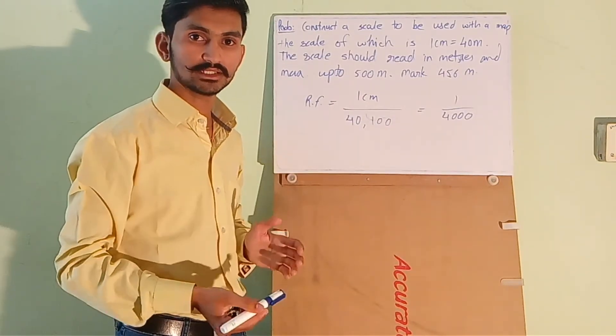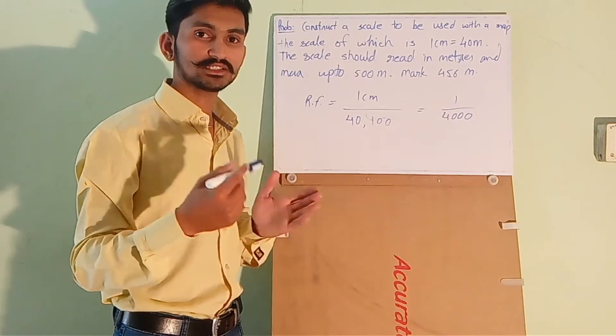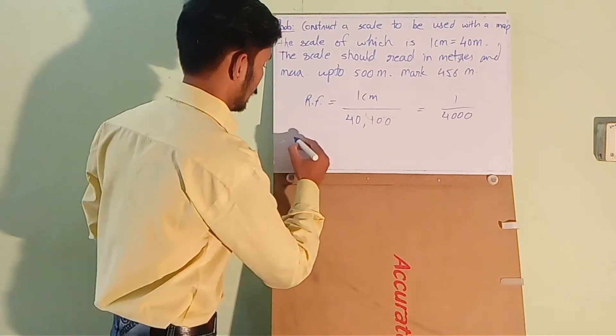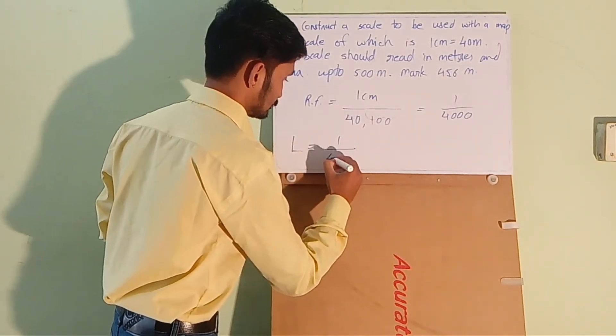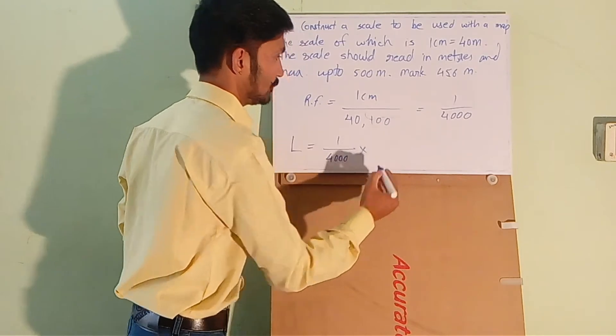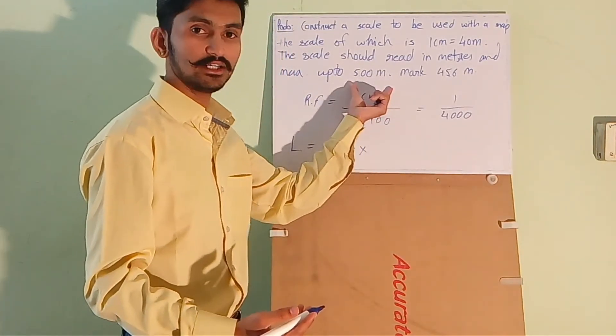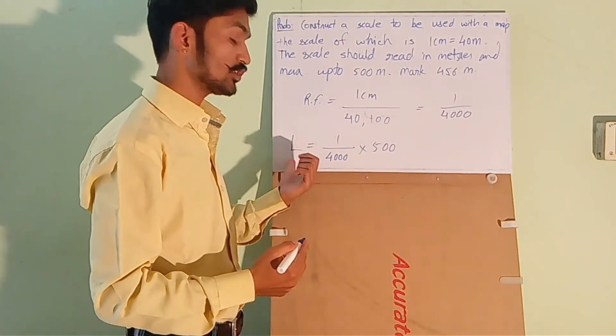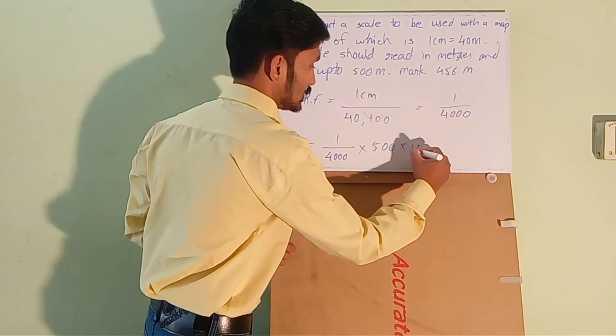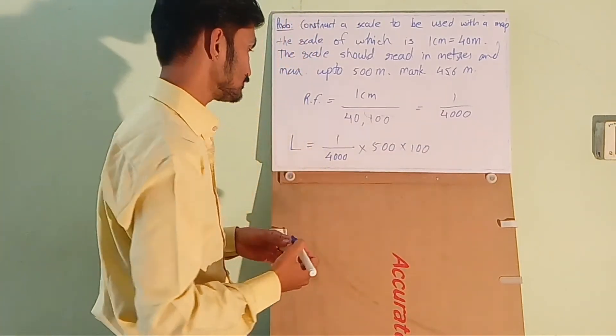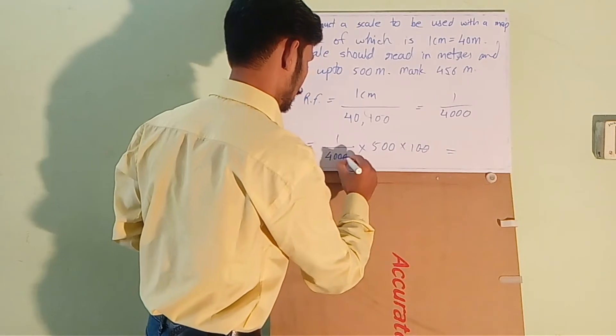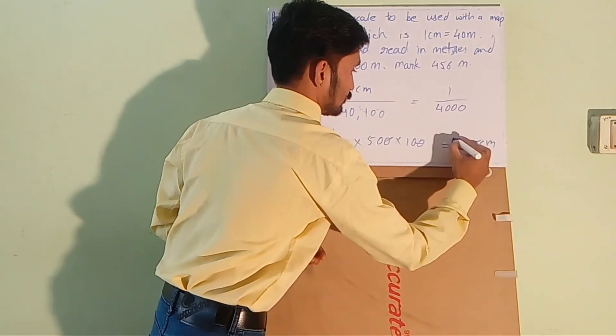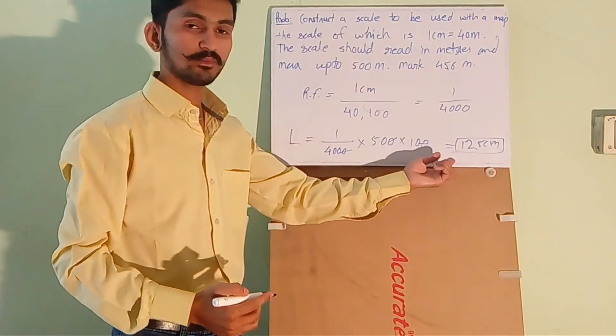Now we have to calculate the length of the scale which is again very easy. Length of the scale is equals to RF multiplied by the maximum length to be measured. So length of the scale is RF multiplied by maximum length to be measured which is 500 meters. But again we want length of the scale in centimeters. We will convert it into centimeters by multiplying by 100. So this is 12.5.